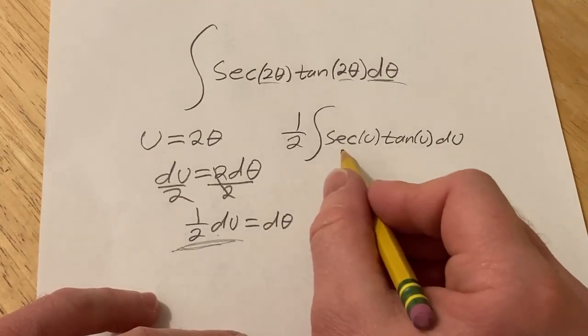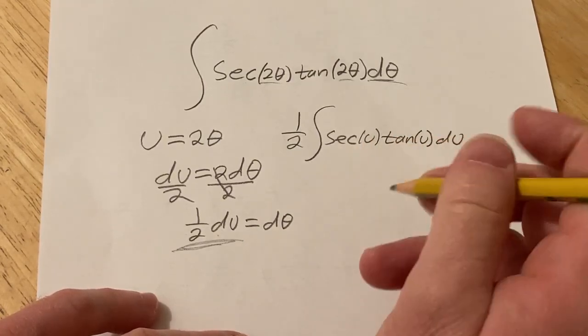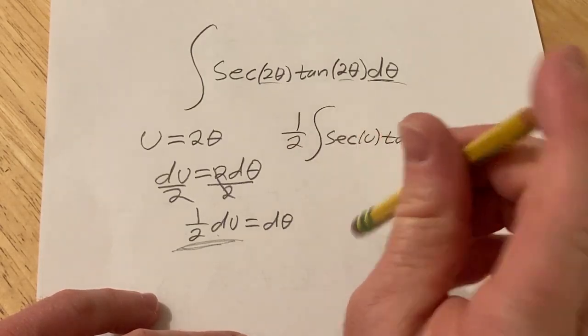And when we're integrating this, we have to think backwards. So we're asking ourselves the question, what is a function whose derivative is going to be secant tangent?